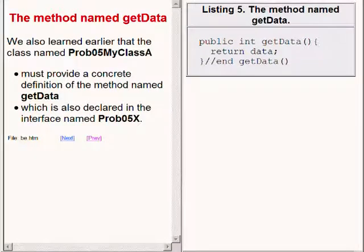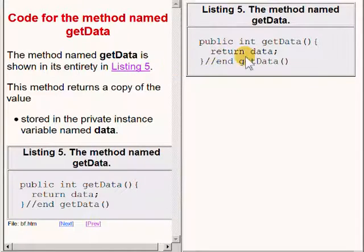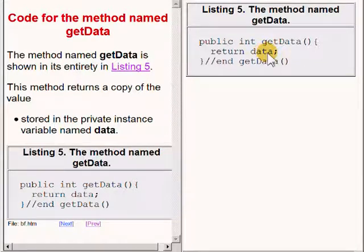We also learned earlier that this class must provide a concrete definition of the method named getData, which is also declared in the interface named prob05x. The method named getData is shown in its entirety on the upper right of your screen. This method returns a copy of the value stored in the private instance variable named data.